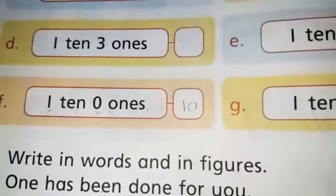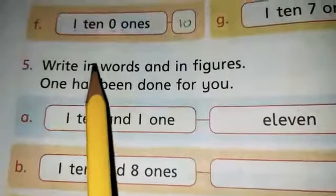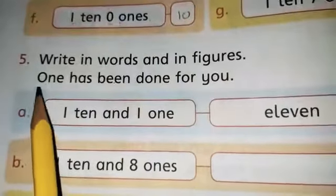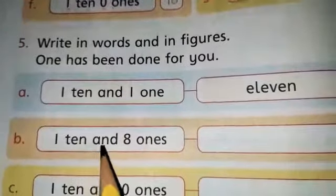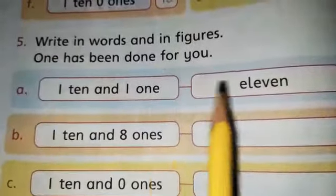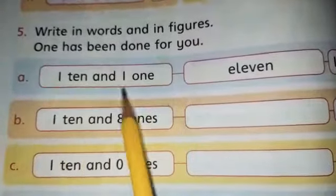Okay dear students you have to complete other questions. Now come to question number five: write in words and in figures. One has been done for you. Students we have to write in words and in figures according to their place values.